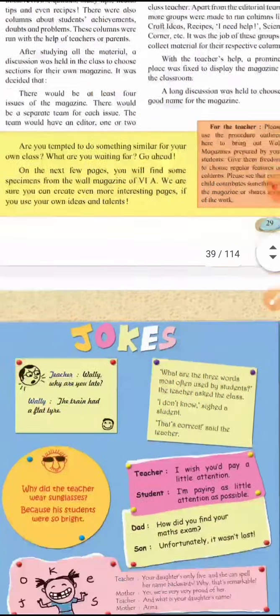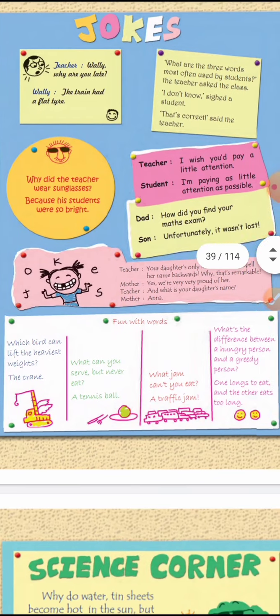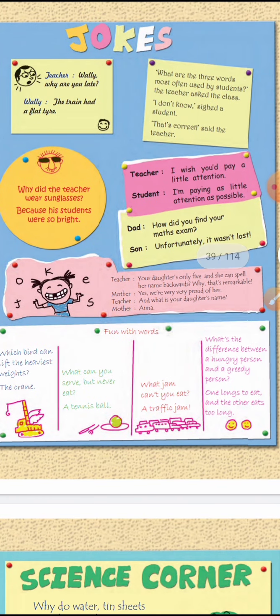Now look — here is the jokes section from the magazine. On a chart paper, different jokes are written and illustrated. The first joke: Teacher asks Wally, 'Why are you late?' Wally answers, 'The train had a flat tire.' A train with a flat tire — that is the joke itself.